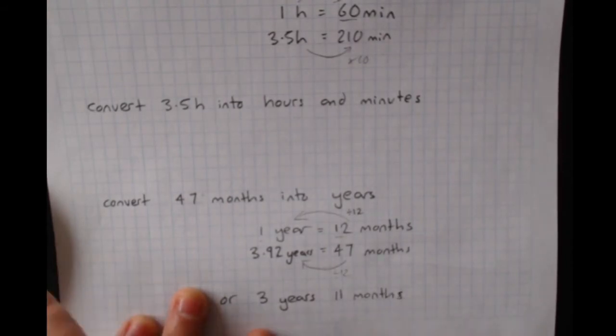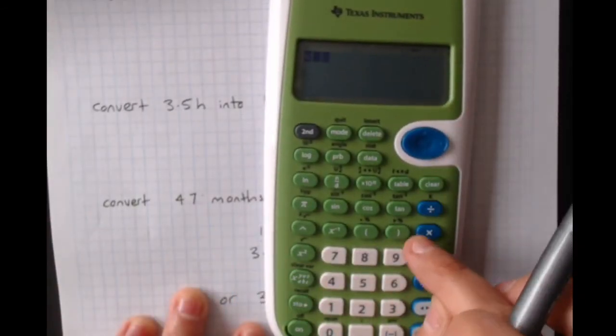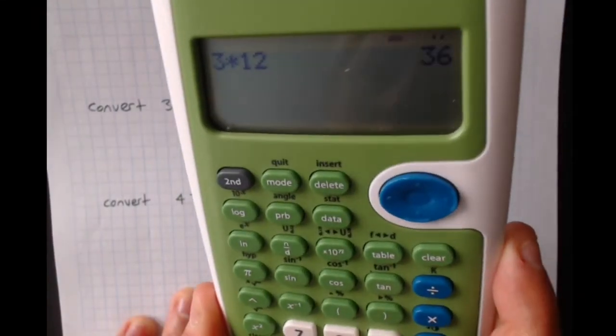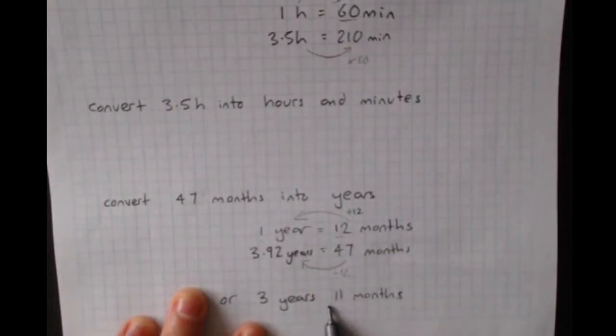Or, of course, what you could do is go, well, 47 months. 3 years would be how many months? 3 times 12. 36 months. And I could just check how many extra months I had to get up to 47.